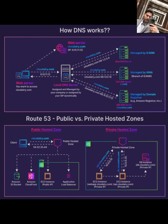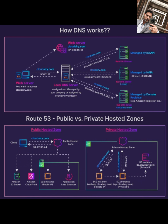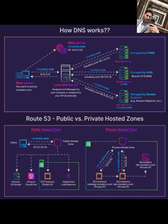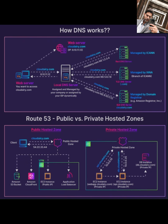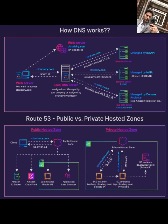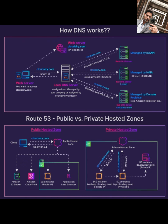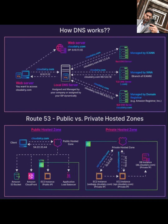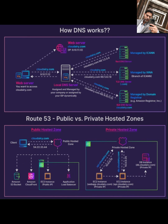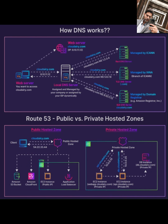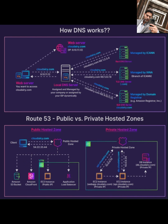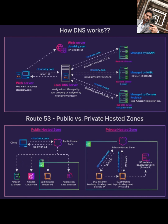You can see this whole process visualized in the diagram — your client computer, the local DNS server and resolver, the queries bouncing up the hierarchy through root, TLD, to the authoritative server, and finally getting the IP to connect to the web server. The diagram also shows how services like AWS Route 53 manage these records for both public websites and private resources within your own network.